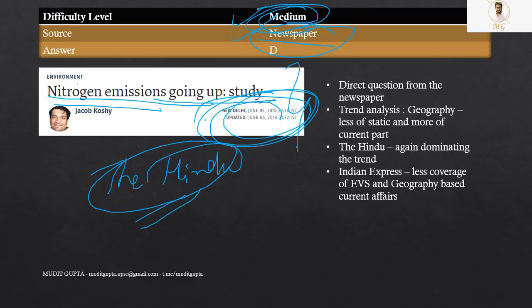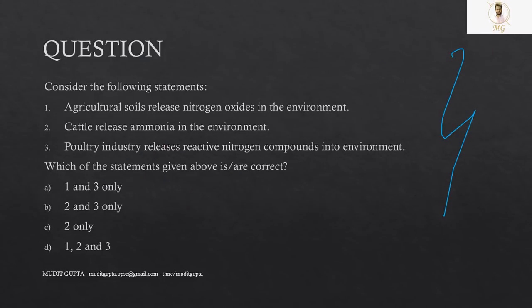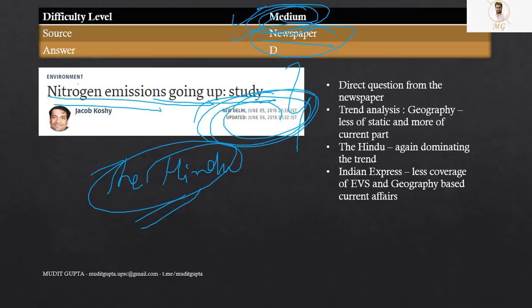So that is why it's got a medium category. Otherwise, this question can be directly solved from newspaper if you have religiously followed one year newspaper window. So see, even in geography as well, current affairs are coming up from newspaper. Environment, ecology, polity, economy, IR, they were always dominated by current affairs, so there is no doubt. But in geography, there is also a role of newspaper.